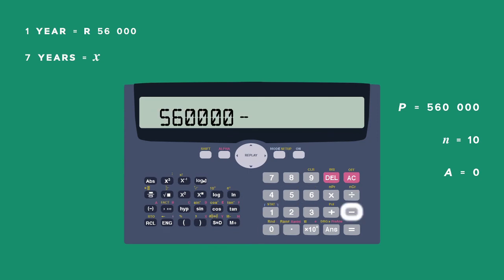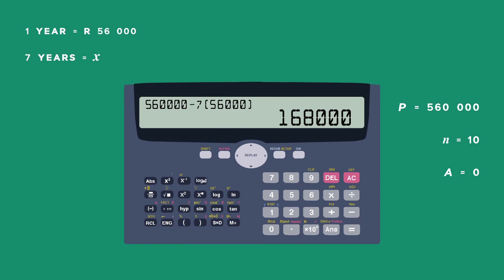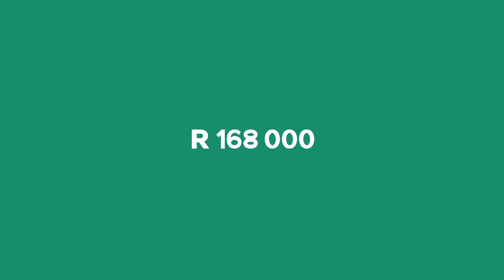Type that into your calculator. 560,000 Rand minus 7 multiplied by 56,000. That equals 168,000 Rand. The value of the truck is reduced to 168,000 after 7 years of depreciation of 56,000 Rand.